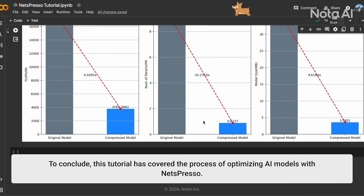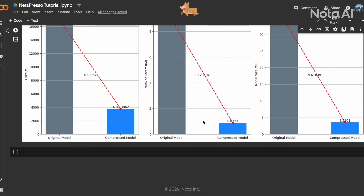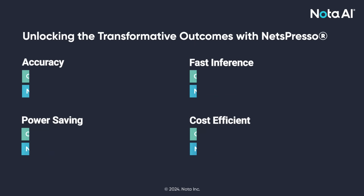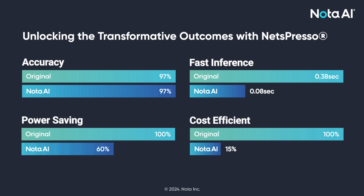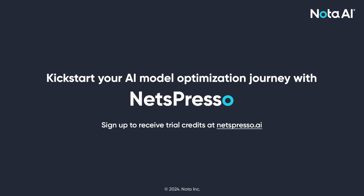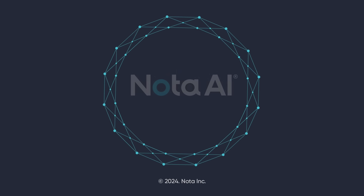To conclude, this tutorial has covered the process of optimizing AI models with Netpresso. Models optimized with Netpresso maintain their accuracy levels while achieving significant improvements: a 4.7 times boost in inference speed, a 1.6 times decrease in power consumption, and 6.6 times cost savings. Kickstart your AI model optimization journey with Netpresso.